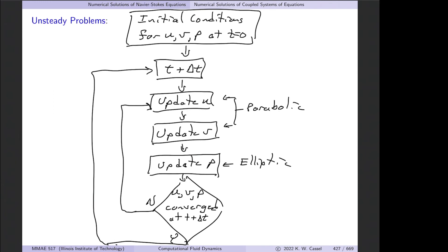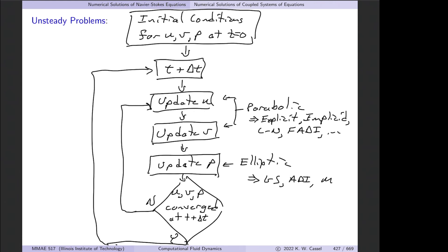For parabolic equations we can use explicit methods, implicit methods, Crank-Nicolson, factored ADI, and so on. For the elliptic Poisson equation, we're back to Gauss-Seidel, ADI, multigrid, direct methods, and so forth. You simply pull in whichever modules you need for solving the steady or unsteady convection-diffusion equations and the elliptic Poisson equation as necessary.